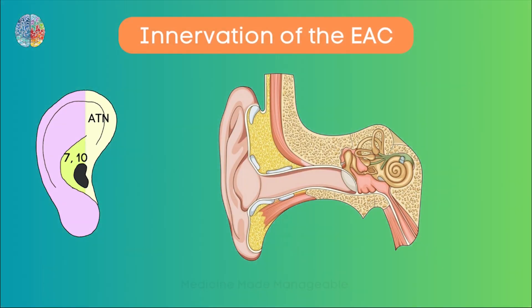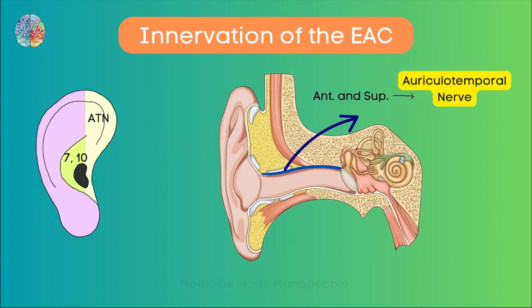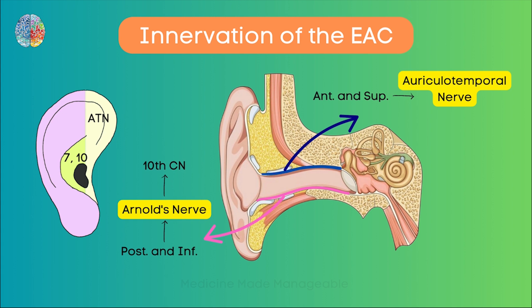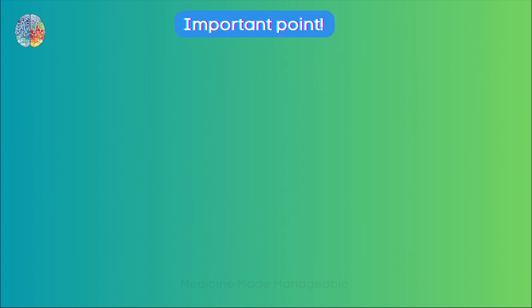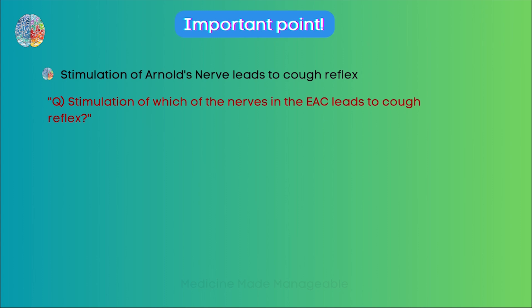The anterior and superior surface of the EAC are supplied by the auriculotemporal nerve, which can be seen as an extension of its pinna innervation into the EAC. The posterior and inferior surface of the EAC is supplied by the nerve of Arnold, which is a branch of the 10th cranial nerve — also an extension from the concha. An important point: stimulation of Arnold's nerve leads to the cough reflex. In an MCQ, they may ask which nerve stimulation in the EAC causes cough reflex — the answer is Arnold's nerve.